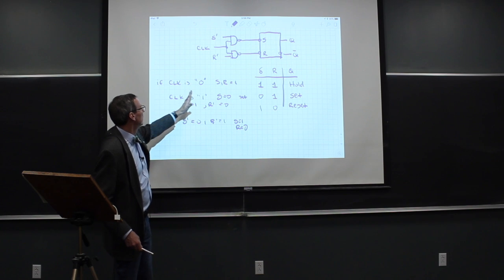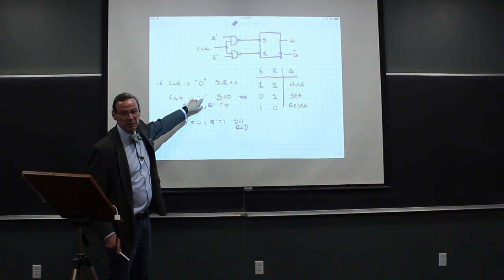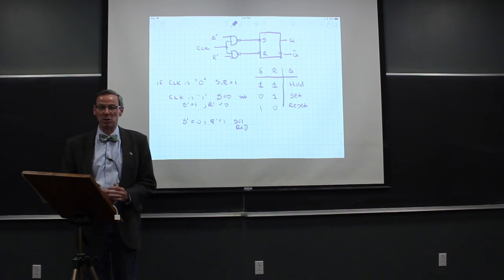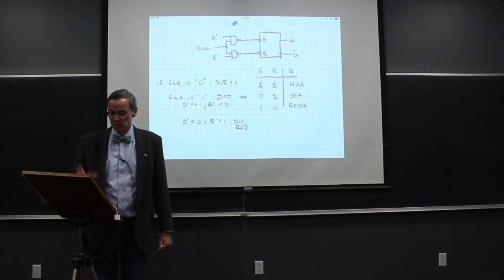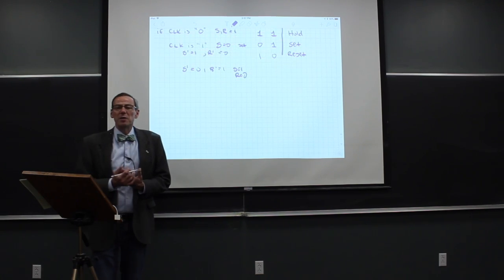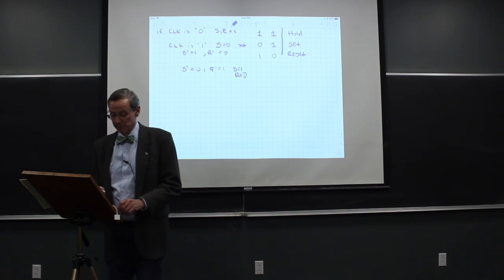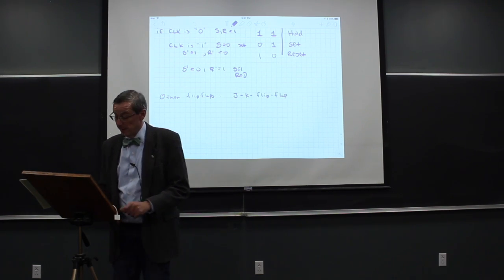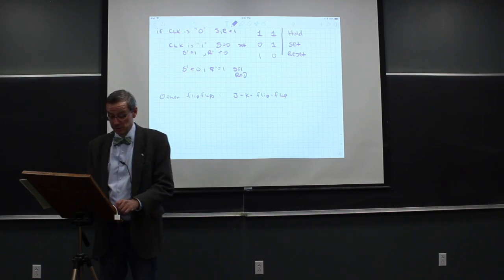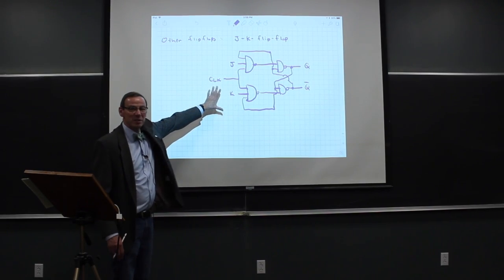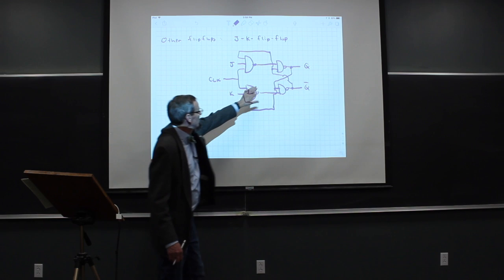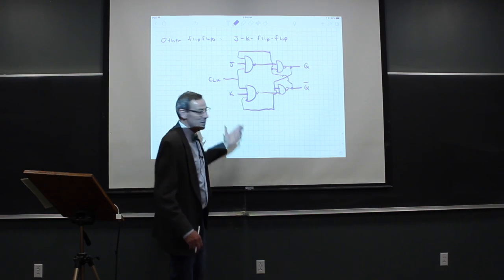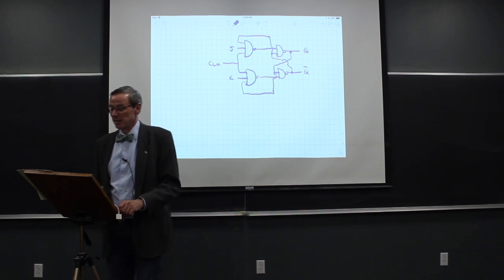The flip-flop only looks at its input when the clock is changing states in one particular direction. That's also a much more common thing — an edge-triggered flip-flop looks at the rising edge of a clock to do something. That's most of what logic is. There are other flip-flops that are also useful, and these are all clocked flip-flops. The first one is called a JK flip-flop. We can draw the circuit — this has the SR flip-flop structure but with feedback into the first stage. We have two inputs, J and K, and a clock. This monstrosity has a truth table.